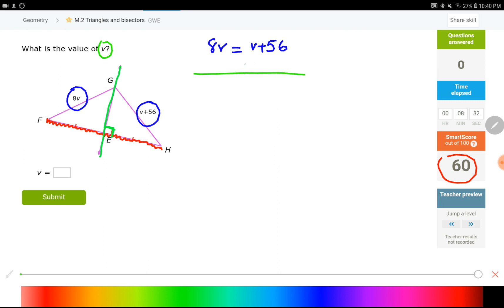I want to put the V's on the left side by subtracting 1V from each side. 8V minus 1V equals 7V. Bring down the equal side and bring down the right side. To get the V by itself, it is multiplied by 7. So, V would be equal to 8.